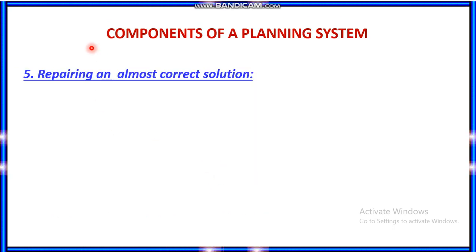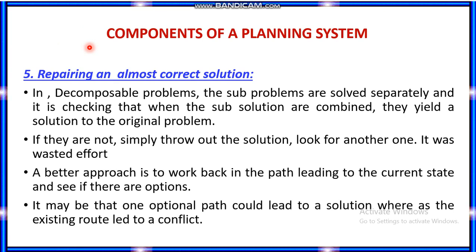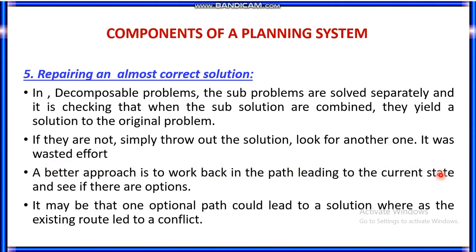The fifth component is repairing an almost correct solution. If you have taken a solution and come across a sequence of steps where you find another solution step that is very easy and familiar, you cannot simply throw away the current solution — that would be a wasted approach. Instead, you have to work back on the path leading to the current state and see if there are any options. One optional path could lead to a solution whereas the existing path would lead to a conflict.